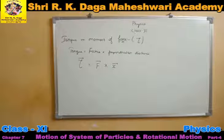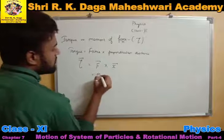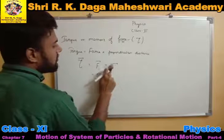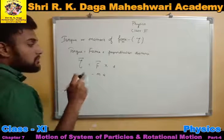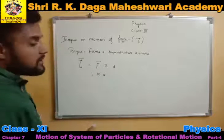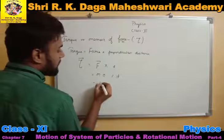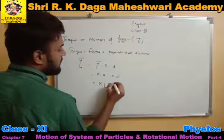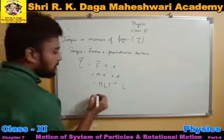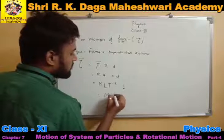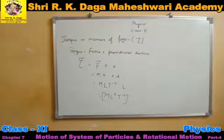Let's talk about the dimensional formula. We know that force is equal to mass into acceleration, and displacement we can denote as d or x. This is equal to the cross product of force and displacement. Mass gives M, acceleration gives LT⁻², and displacement gives L. So you will get M·L²·T⁻². This will be the dimensional formula of torque.